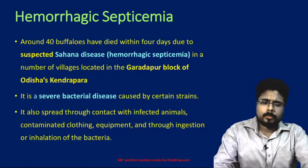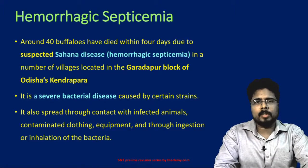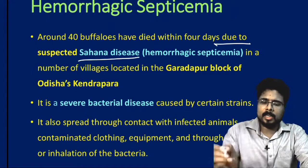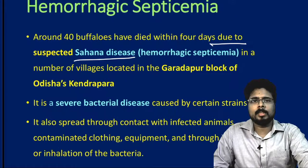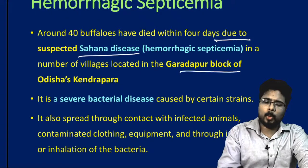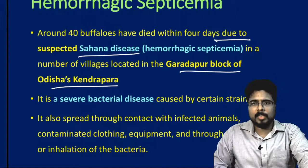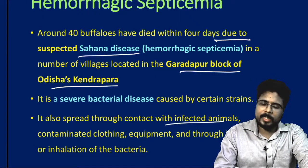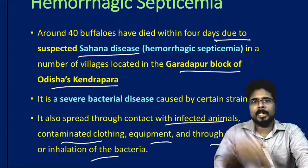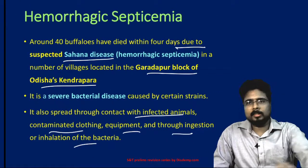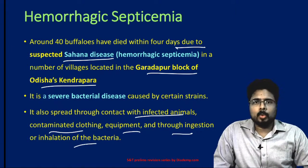Next, hemorrhagic septicemia. Around 40 buffaloes recently died within four days due to suspected hemorrhagic septicemia in villages located in the Gardarpur block of Odisha's Kendrapara district. It is a severe bacterial disease caused by certain strains of bacteria. It spreads through contact with infected animals, contaminated clothing, equipment, and through ingestion or inhalation of bacteria.